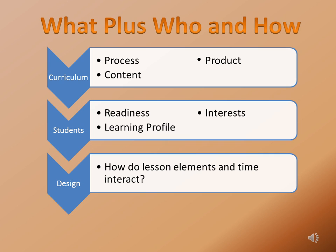Once we know what results we expect our students to achieve, then we can start to plan the what, the who, and the how. We want to know what elements of the curriculum can be differentiated in a way that will help students achieve. We want to know who the students are based on their learning needs. These can include readiness, learning profile, and their interests relative to the objectives.